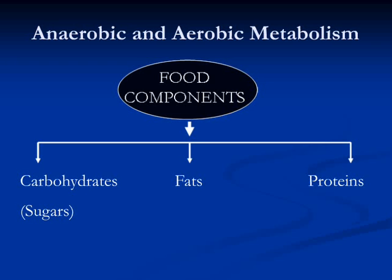Let's have a look at the process of aerobic and anaerobic metabolism. These are the main components of food that we eat. Food components are broken down into smaller components before cells can use them. Sugars, or carbohydrates, are broken down into simple sugars — from polysaccharides to glucose, also called monosaccharides.